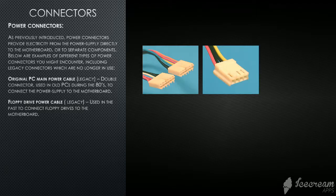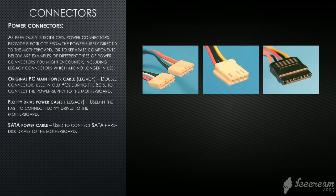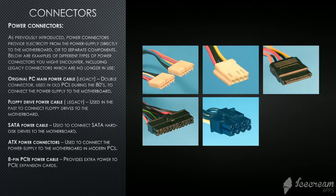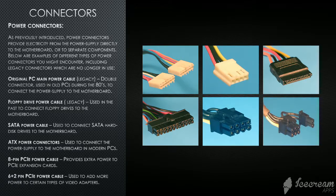The floppy drive power cable is also a legacy connector used in the past to connect floppy drives to the motherboard. The SATA power cable is used to connect SATA hard drives to the motherboard. The ATX power connector is used to connect the power supply to the motherboard in modern PCs. The 8-pin PCIe power cable provides extra power to PCIe expansion cards. The 6-plus-2-pin PCIe power cables are used to add more power to certain types of video adapters.